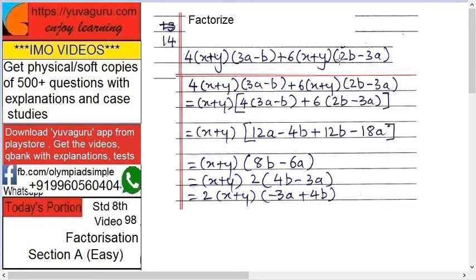The expression is 4(x+y)(3a-b) + 6(x+y)(2b-3a). Anything can be asked in this question - it can be 'one of the factors is this' or 'check which one is the factor.' But basically, you have to factorize. First, write the expression as it is.